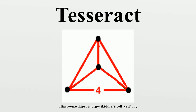As a uniform duoprism, the tesseract exists in a sequence of uniform duoprisms p×4. The regular tesseract, along with the 16-cell, exists in a set of 15 uniform four-polytopes with the same symmetry. The tesseract 4,3,3 exists in a sequence of regular four-polytopes and honeycombs p,3,3 with tetrahedral vertex figures 3,3.